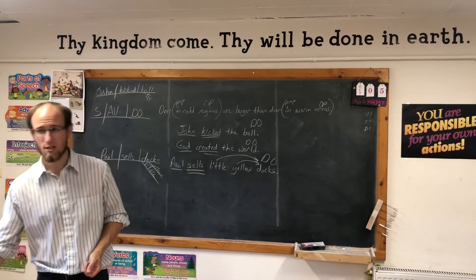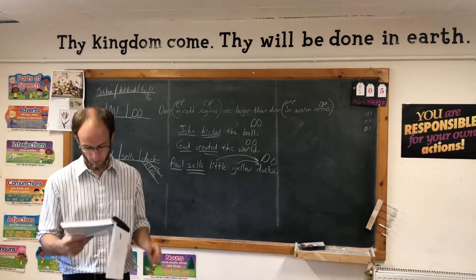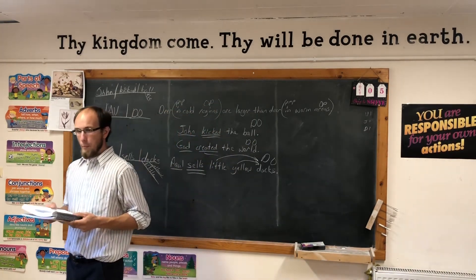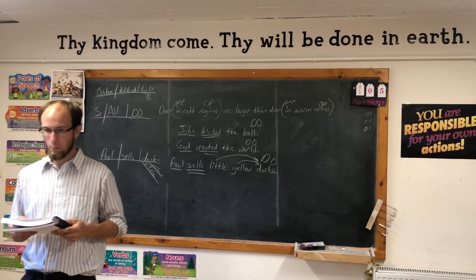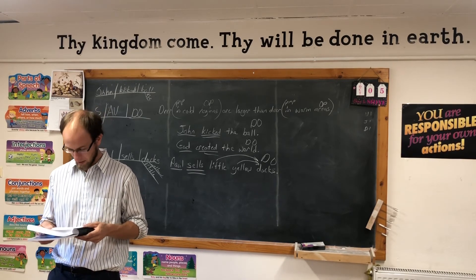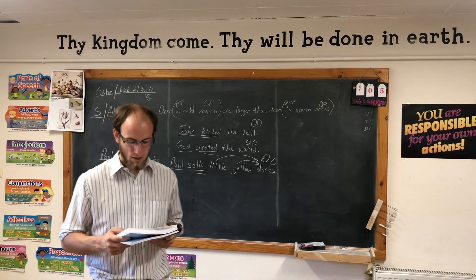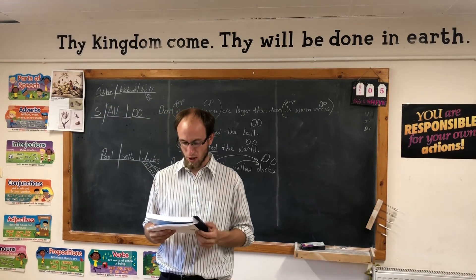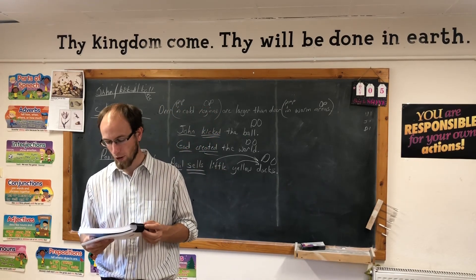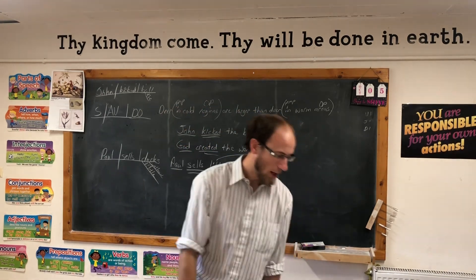Finally, before we quit, let's read the new spelling words so you know how they are pronounced — on page 26: backpack, basin, billfold, bottle, briefcase, bucket, cabinet, carton, cistern (that has a soft C), crock, dishpan, drawer, kettle, pitcher, pouch, purse, thermos, tumbler, vase, vessel. Lots of household items — hope you can do well on it.